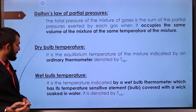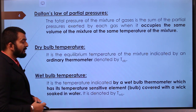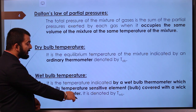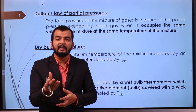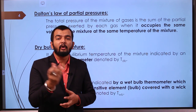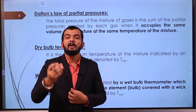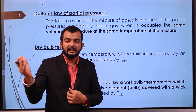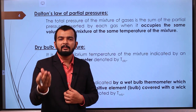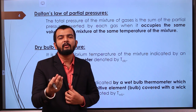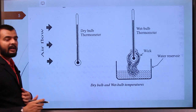Wet bulb temperature is the temperature indicated by a wet bulb thermometer, which has its temperature-sensitive element covered with a wick soaked in water, denoted by WB. The bulb is covered with a cotton wick dipped in water. The dry air in the surroundings heats the bulb via the wet wick, and whatever temperature it measures is the temperature of the saturated air in that case.